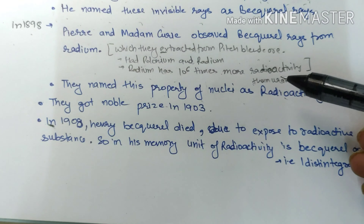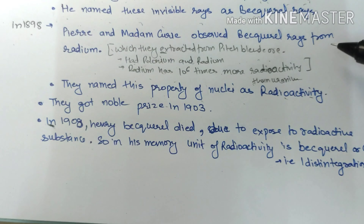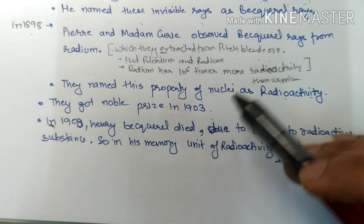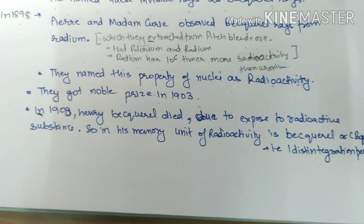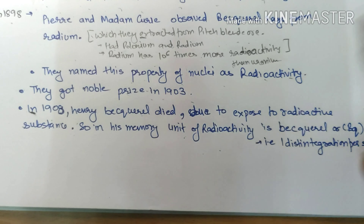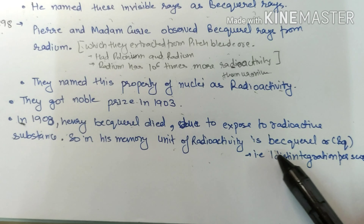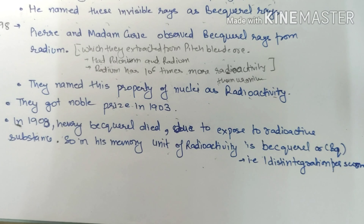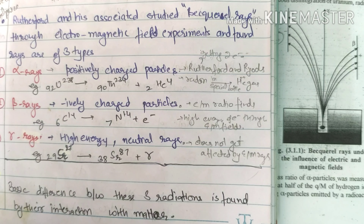Becquerel, Madame Curie, and Pierre all got the Nobel Prize in 1903. In 1908, Henry Becquerel died due to exposure to radioactive substances. In his memory, the unit of radioactivity was named after him — 1 Becquerel is equal to 1 disintegration per second.